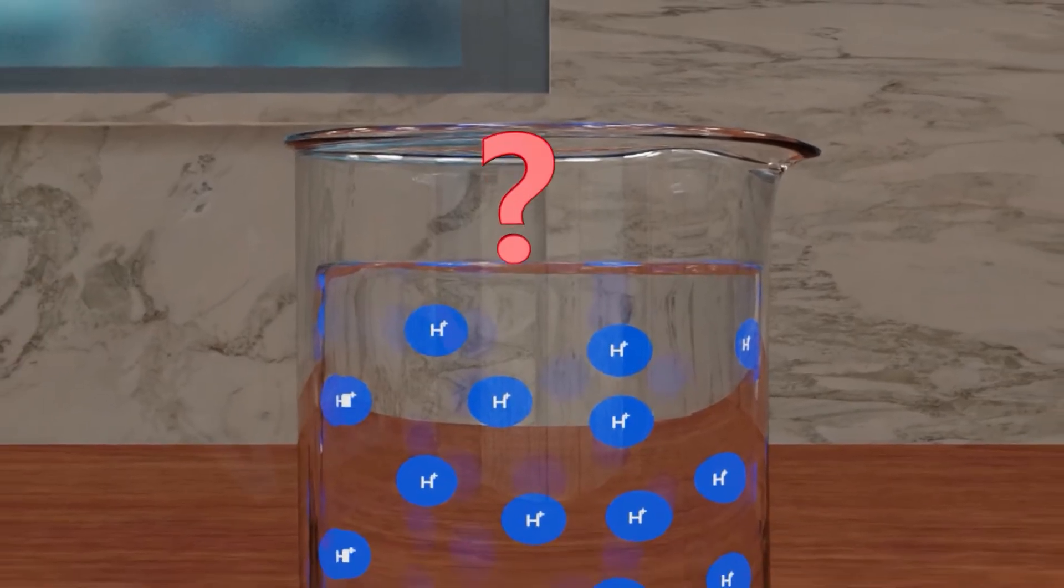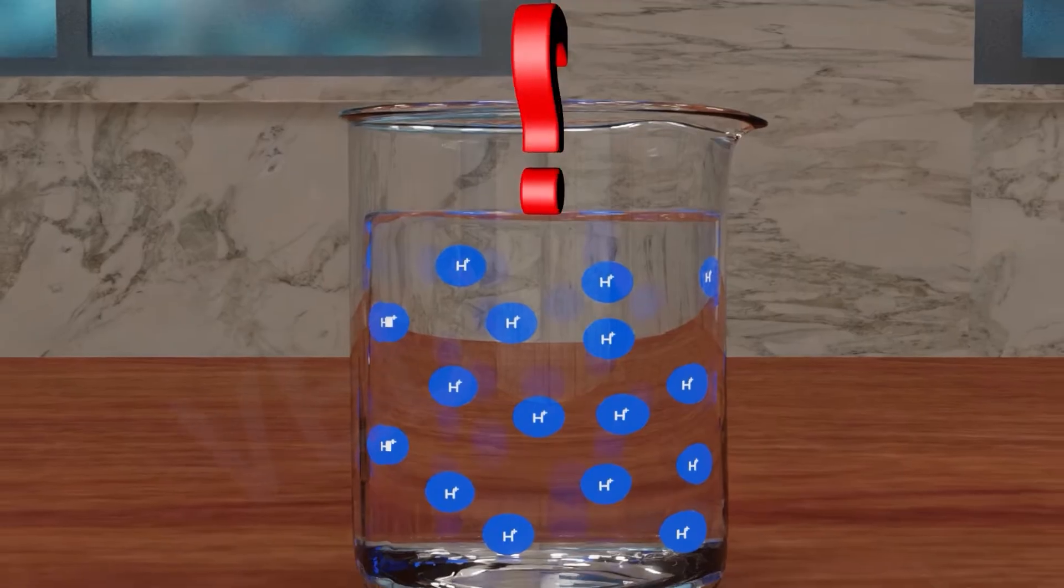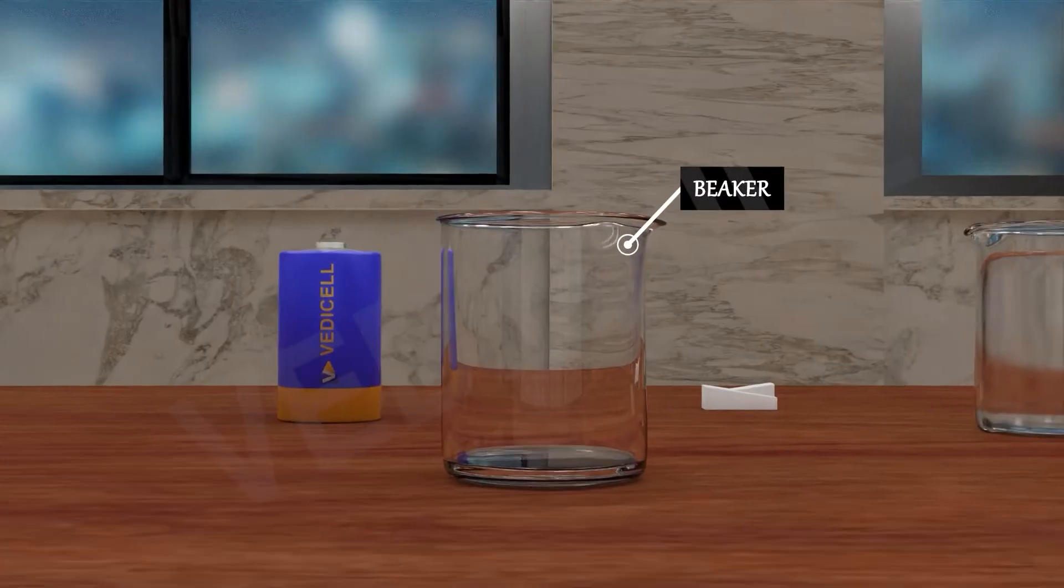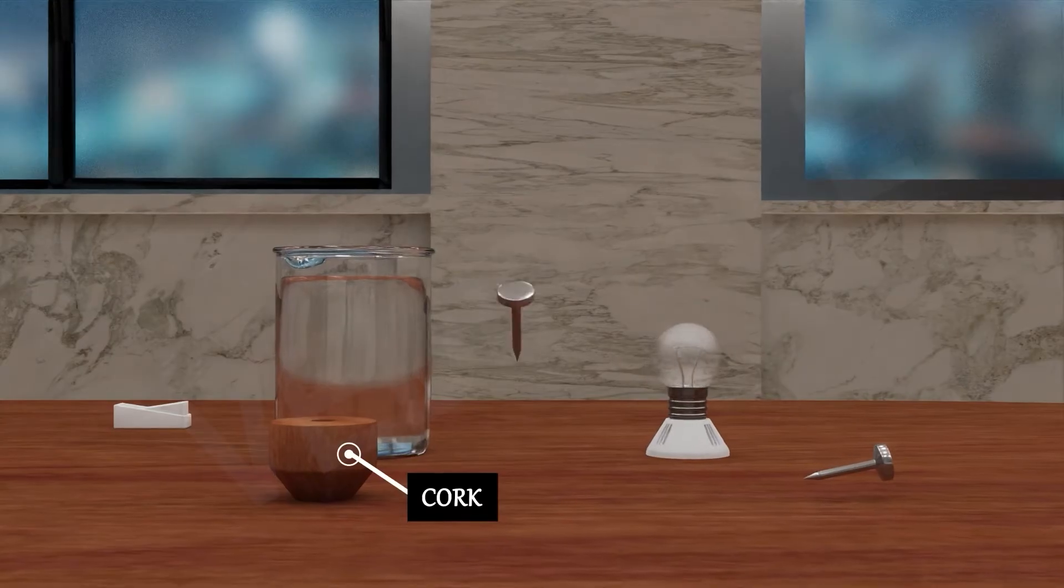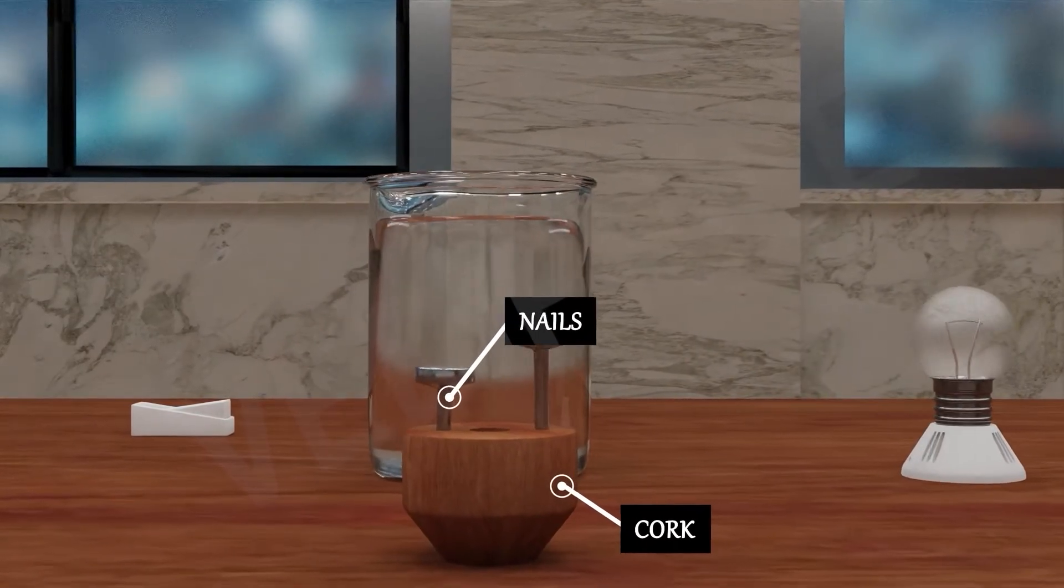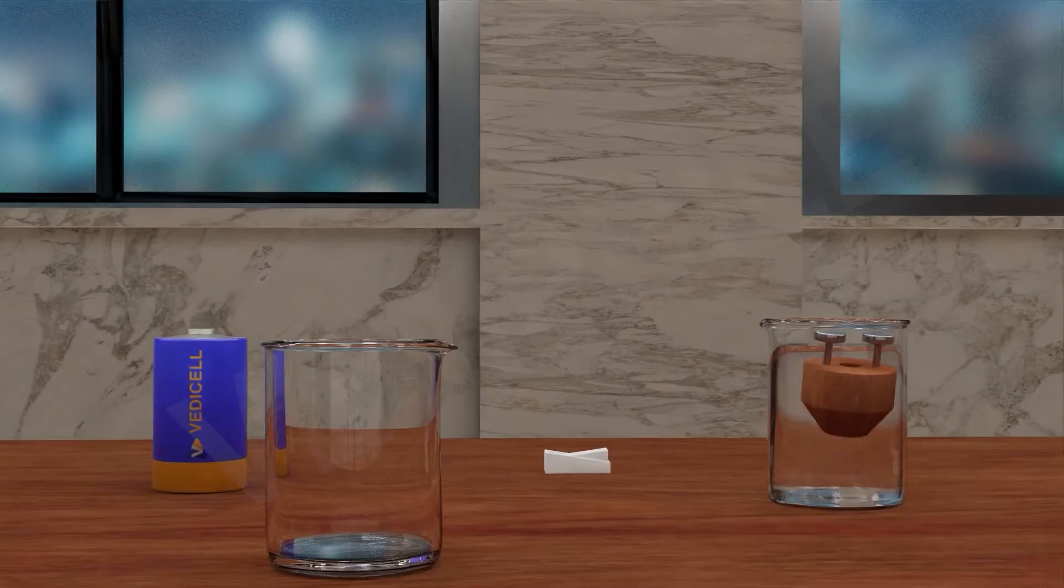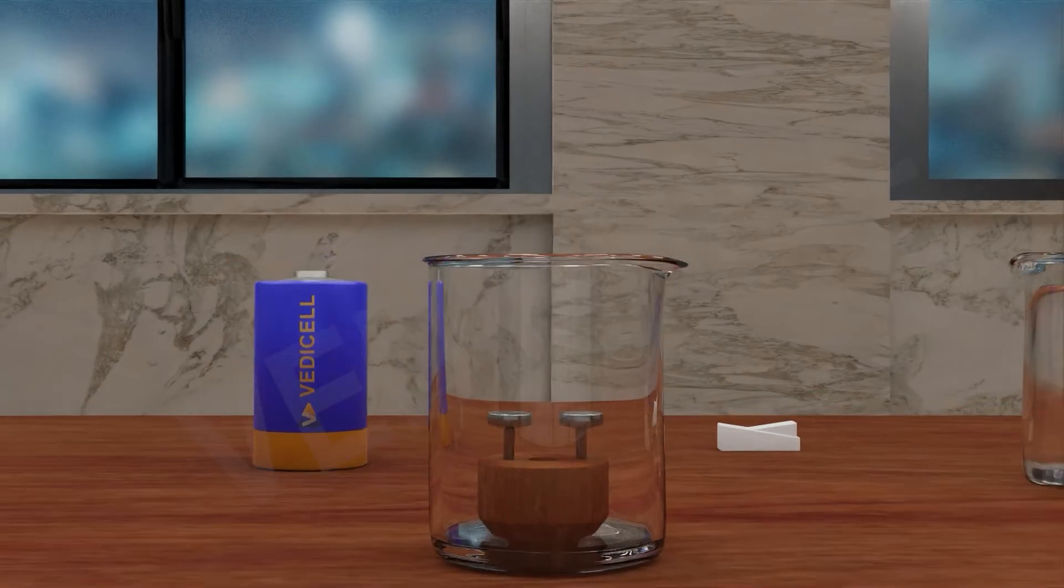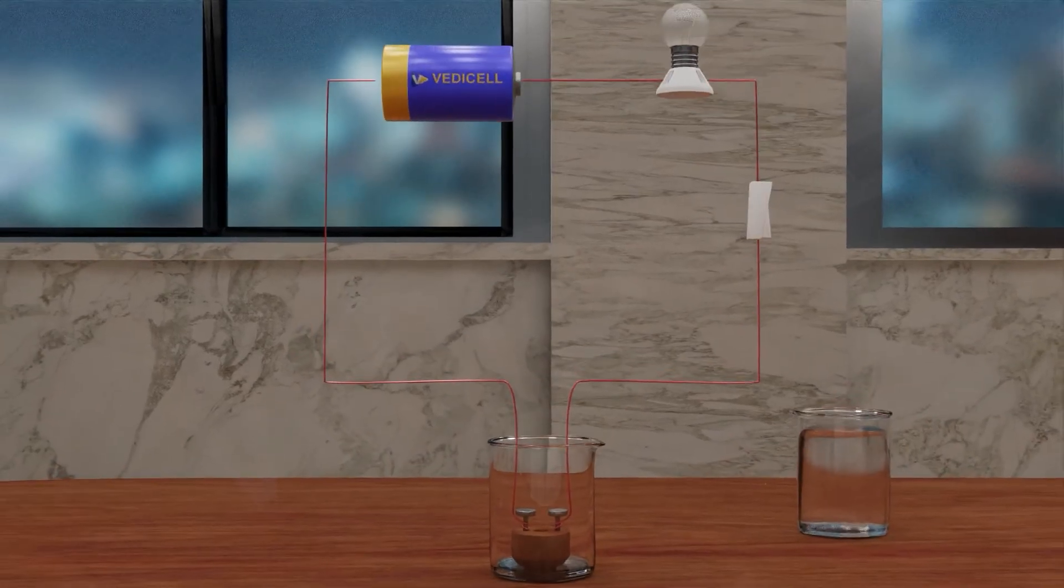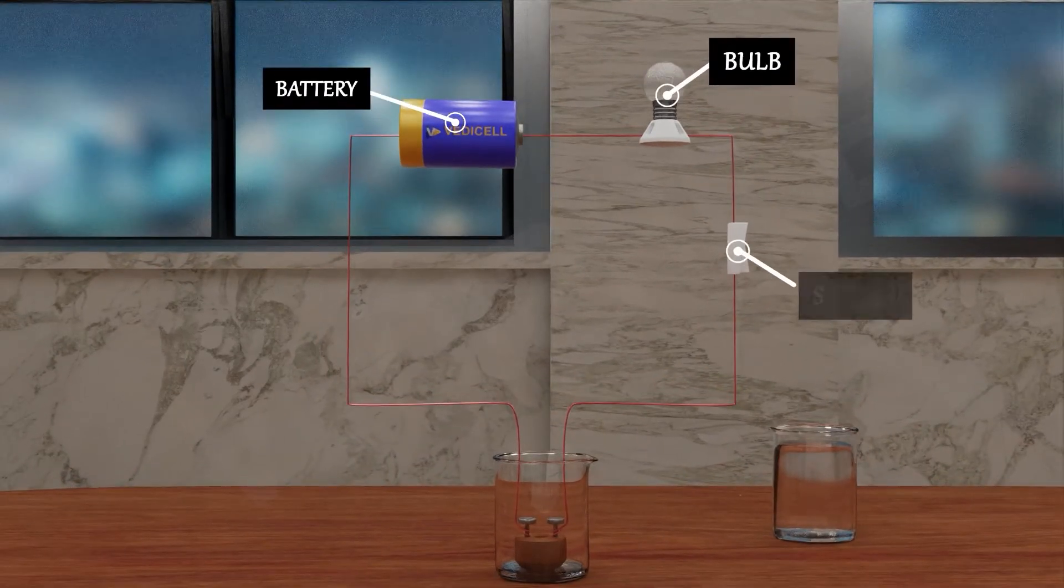So, can acidic solution conduct electricity? Let's see through this experiment. Take a beaker, fix two nails on a cork, and place this cork in a 100 ml beaker. Connect the nails to the two terminals of a battery, bulb, and switch.